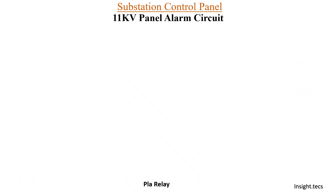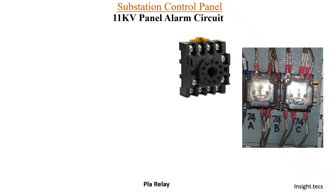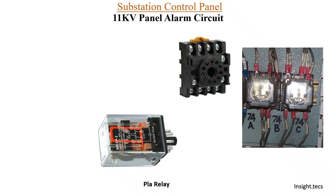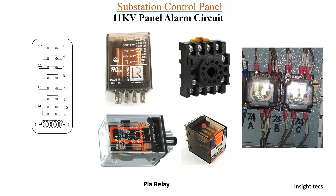So PLAR relay — PLA is the make of this relay. This is somewhat what it looks like. This is the base of this relay; we have to fix this on the panel. And this is the actual relay, which gets fixed inside the base. Nowadays we also have this kind of PLAR relay, and in some panels this kind of micro relay. Basically, inside the PLAR relay we have an operating coil and we have a few NO and NC contacts. This is the operating coil, this is the NC contact, and this is the NO contact. Whenever the coil gets operated, the NO gets converted to NC and the NC gets converted to NO.